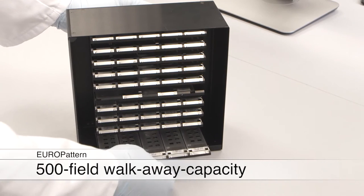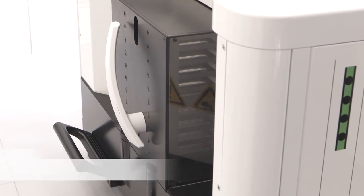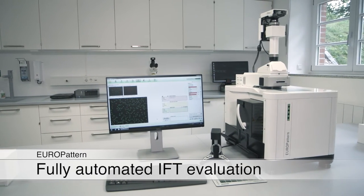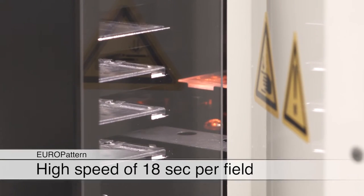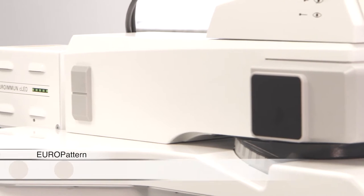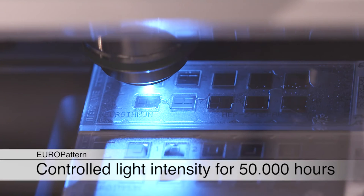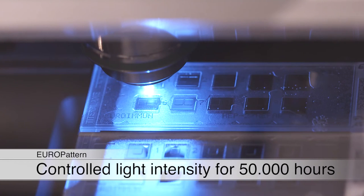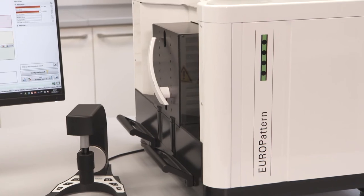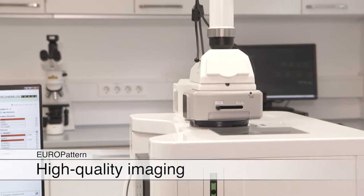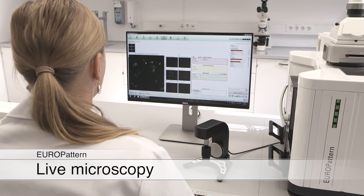For larger sample numbers, the object slides can be loaded into the EuroPattern microscope magazine which can carry up to 500 fields. Here they are automatically identified and microscoped. This procedure ensures complete traceability of results. The self-calibrating Euroimmune CLED guarantees a constant light intensity for over 50,000 hours of work. Vibration dampers, high quality optics and the double camera system provide for excellent image quality and highest speed of 18 seconds per field or 200 fields per hour respectively.